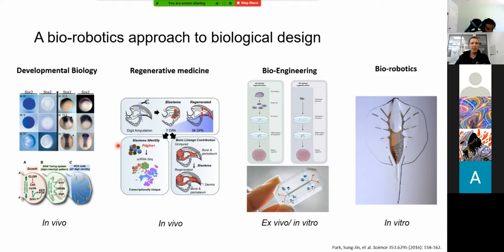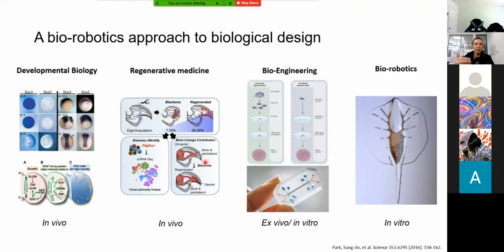Regenerative medicine is really trying to turn those same pathways on in a fully differentiated system to kickstart regeneration. So if you understand the developmental biology of how a limb forms, then if you lose something like a finger — as in this mouse amputation example — you could understand how to turn those genes back on to regrow that lost structure. This has been a huge goal of regenerative medicine ever since the start.